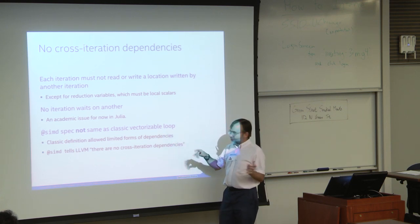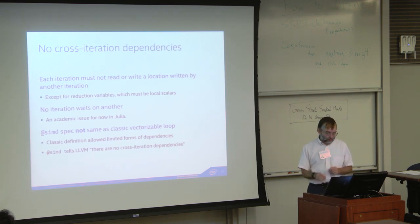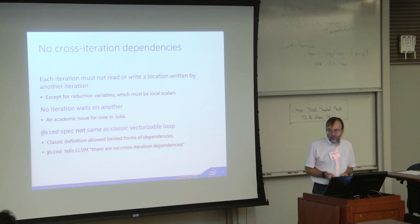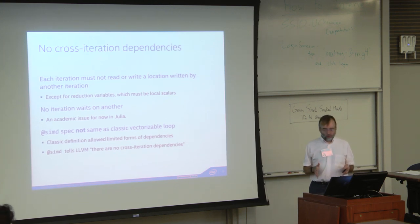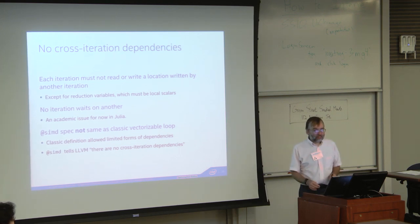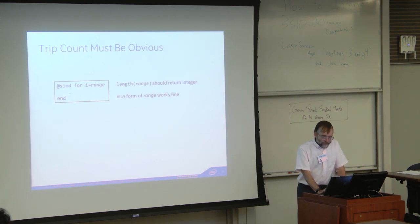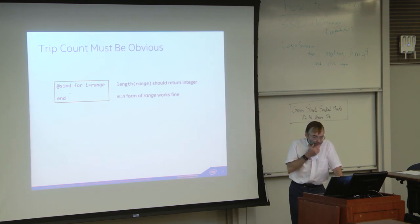If you're familiar with classical vectorization and forward lexical dependencies, forget it right now — just pretend that all iterations have to be independent. The @simd annotation tells LLVM explicitly to declare that all iterations are independent and can be run in parallel. The trip count has to be obvious; if you just use the normal for-loop syntax, it should be okay.